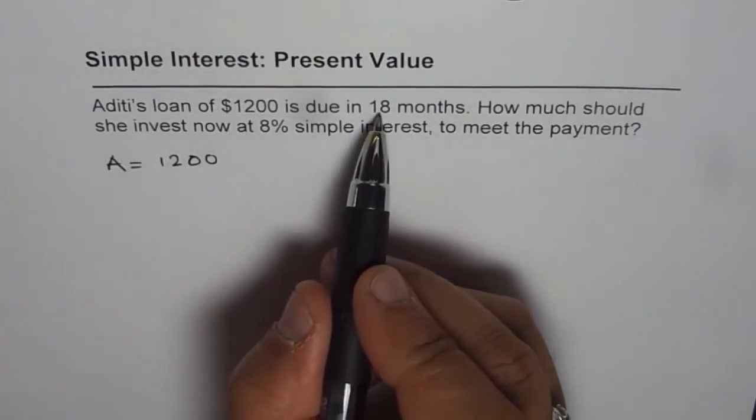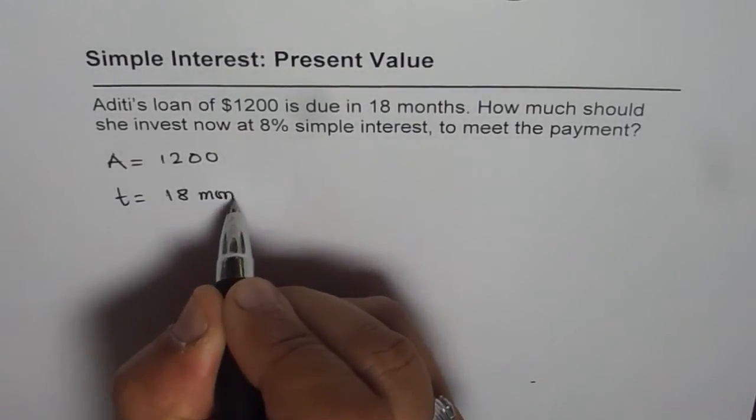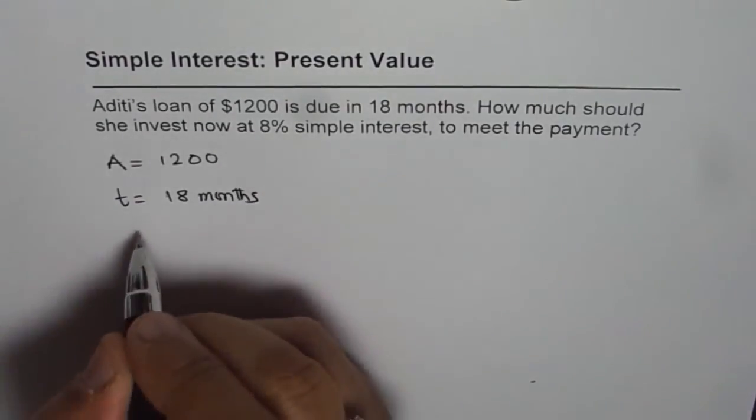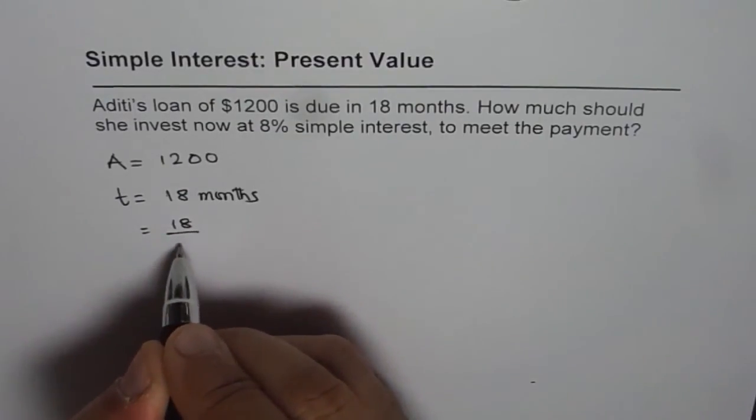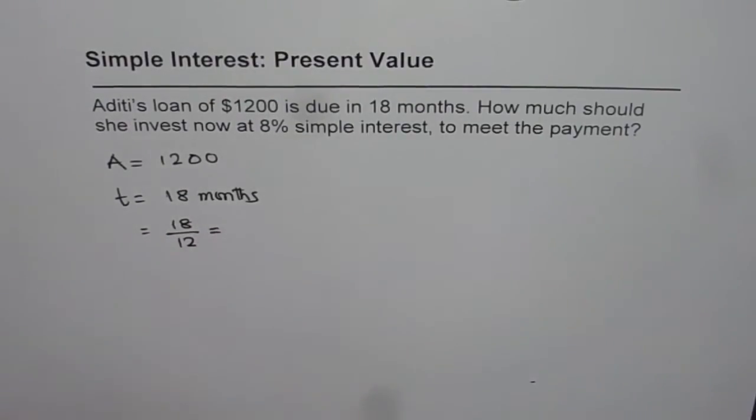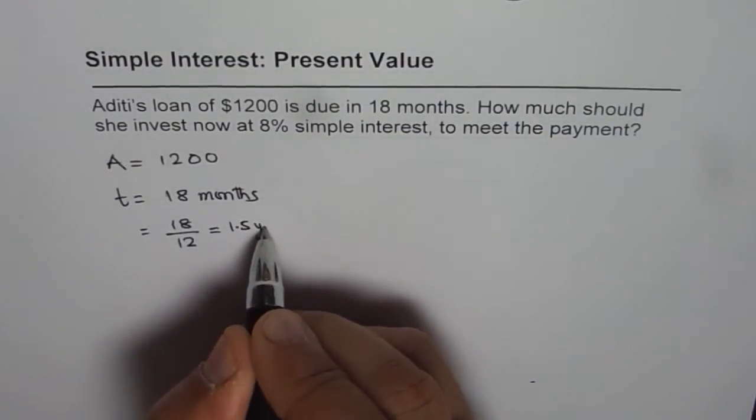Time duration is 18 months. So T is 18 months. That's a good idea to write this time duration in years. That means 18 divided by 12. So that is 1.5 years.